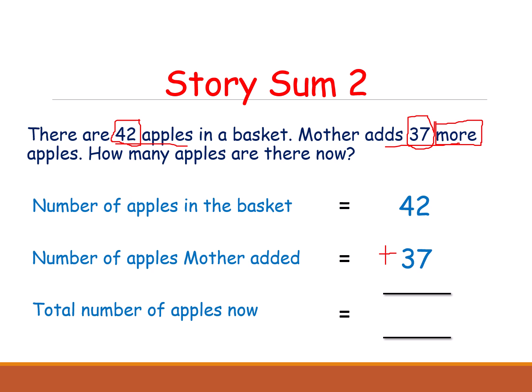In the ones place we have 2 and 7. Which is the greatest number? 7. Keep 7 in your mind and open 2 fingers. After 7: 8, 9. So what is 2 plus 7? 9.